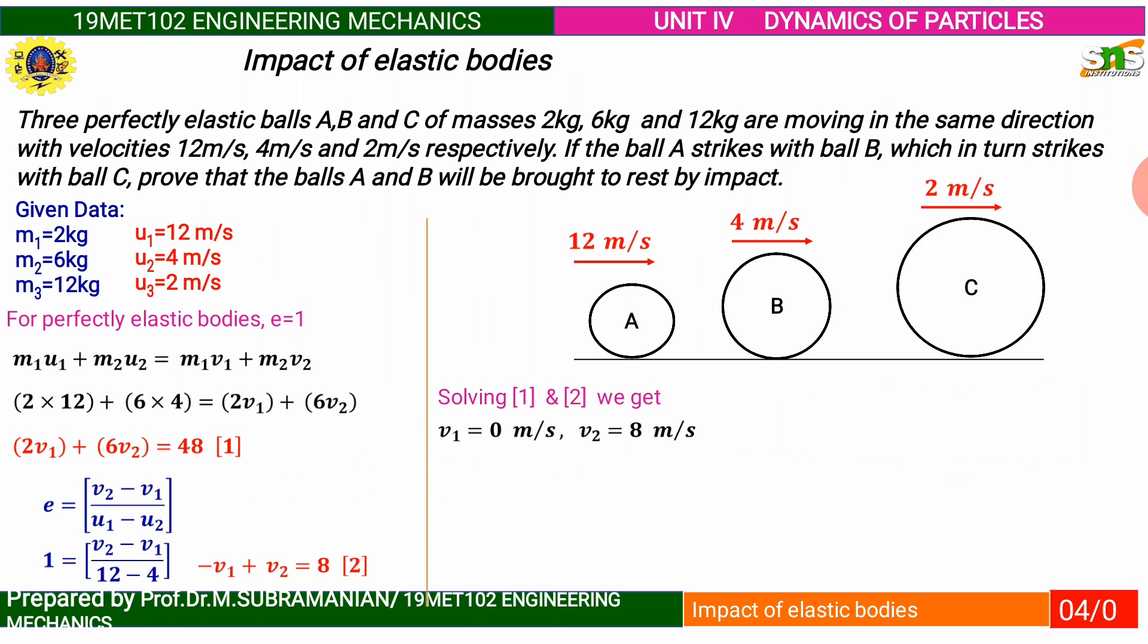First write down all the given data. All masses are given: M1, M2, M3 are 2, 6, 12 respectively. U1, U2, U3 are 12, 4, 2.